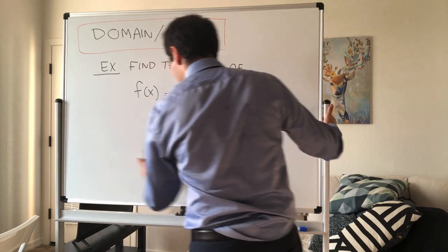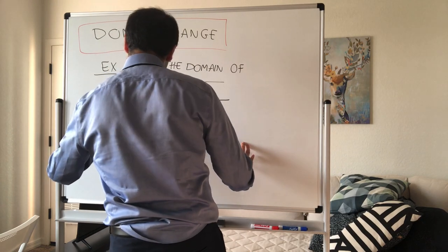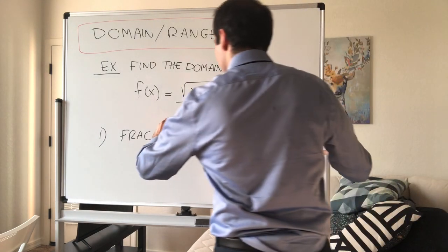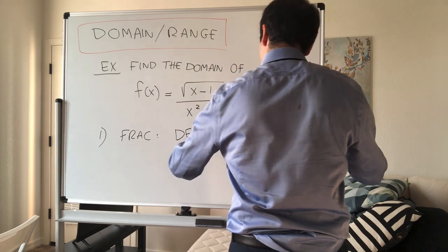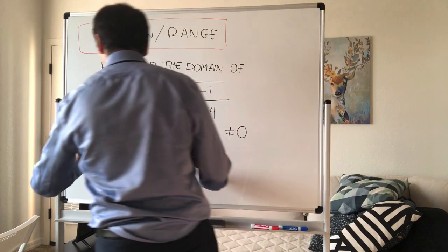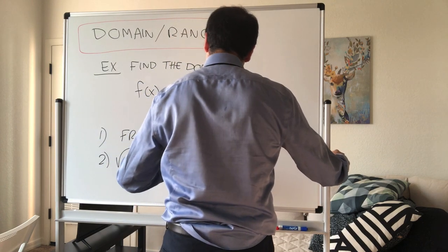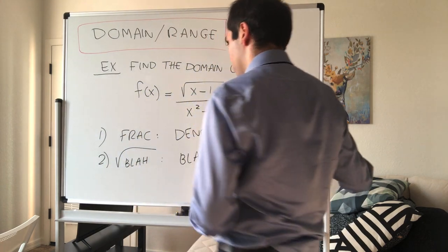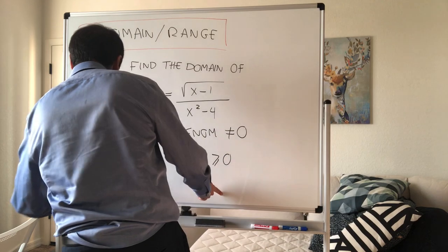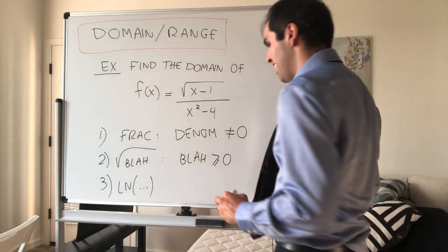First of all, for fractions, whenever you see a fraction, something a over b, you need to make sure the denominator is non-zero. Second of all, when you see square root of something, you need to make sure the inside is non-negative. Last but not least, whenever you see ln, not in this example but in general, you need to make sure that the stuff inside the ln is positive.